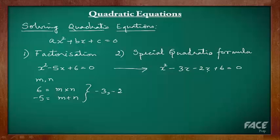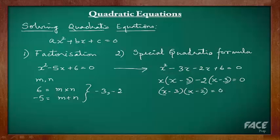We can do this as: x² - 3x - 2x + 6 = 0. Notice there is no change in the value of the equation. From the first two terms, x is common — we take it out: x(x - 3). In the next terms, 2 is common, so we take out minus 2, leaving (x - 3). Notice that (x - 3) is common from both expressions. Taking it out gives (x - 3)(x - 2) = 0. Hence, either x - 3 = 0 or x - 2 = 0, giving x = 3 or x = 2. These are the roots of the equation.